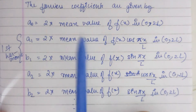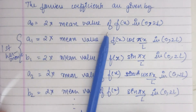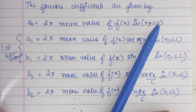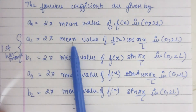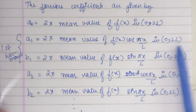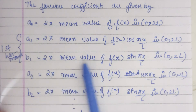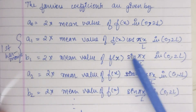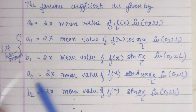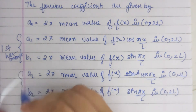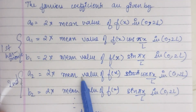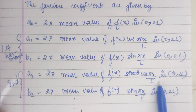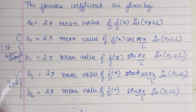The coefficients of the Fourier series are given by: a0 = 2 × mean value of f(x) in the interval 0 to 2l. For the first harmonic, a1 = 2 × mean value of f(x)·cos(πx/l), and b1 = 2 × mean value of f(x)·sin(πx/l) in the same interval. For the second harmonic, a2 and b2 follow similarly, and so on.